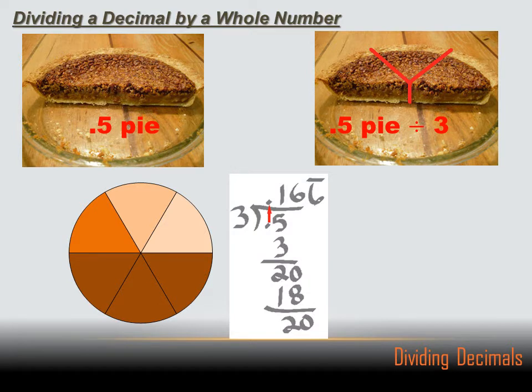Now to do the math for this, it's pretty easy. We divide half a pie by three. And the first thing we got to do is move our decimal point up to the answer line. And then we just divide. Three goes into five, one time, remainder of two. And you know how to do that math, so I won't carry it out. But the answer is point one-sixth repeating.